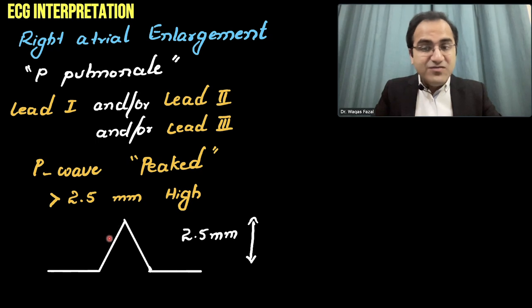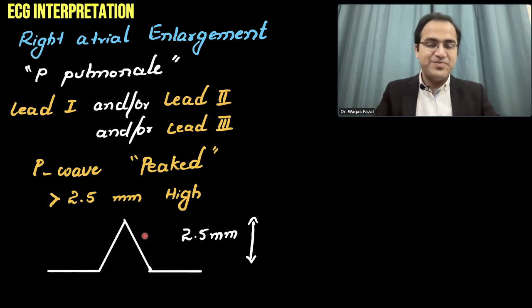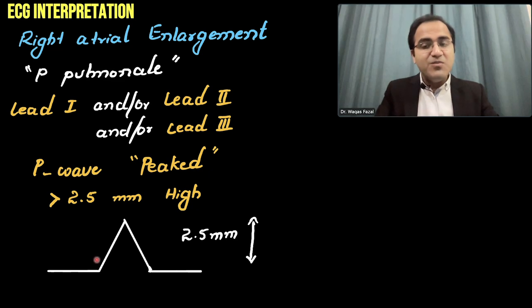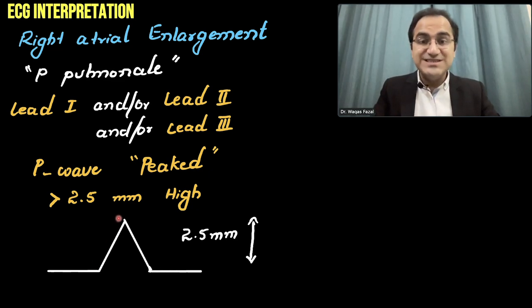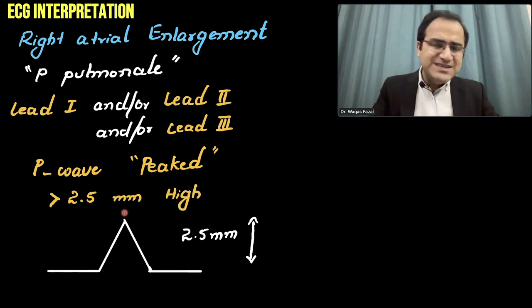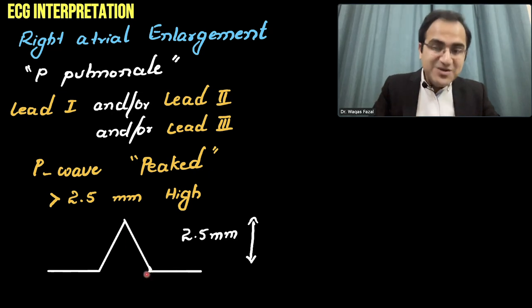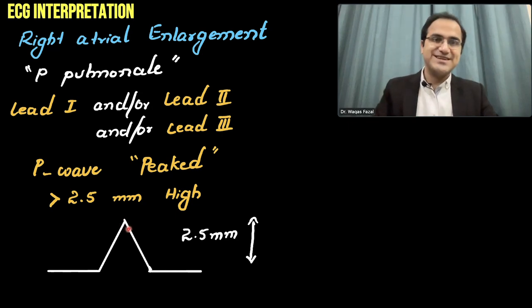This part of the P wave shows the right atrium, and this part shows the left atrium. Whenever there is right atrial enlargement, it will result in high voltage and a tall P wave. But when the current goes to the left atrium, the left atrium is not enlarged — it does not have that much tissue or enlargement. Therefore, the left atrium will not be able to maintain the voltage and the voltage will suddenly drop, resulting in the peaking of the P wave. That is the classical P pulmonale seen in right atrial enlargement.